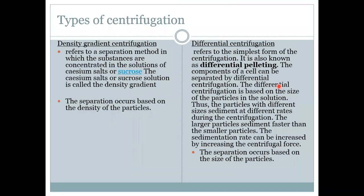There are two types of centrifugation: density gradient centrifugation and differential centrifugation. In density gradient centrifugation, a sucrose solution or cesium salt solution is used as the density gradient. In differential centrifugation, the sample is centrifuged repeatedly, which is why it is also called differential pelleting — substances are concentrated in solutions of cesium salts or sucrose.